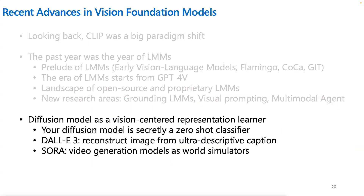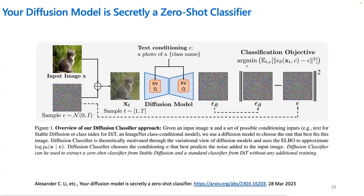We'll also discuss diffusion models today. If LMMs are adding image conditioning to language generation, diffusion models are the opposite — they add text conditioning to image generation. We believe diffusion models are important to vision foundation models not only from the perspective of image and video generation, but also as a vision-centered representation learner. A paper called 'Your Diffusion Model is Secretly a Zero-Shot Classifier' showed that even if you are modeling the distribution of images given text, the model can be converted into a classification model.